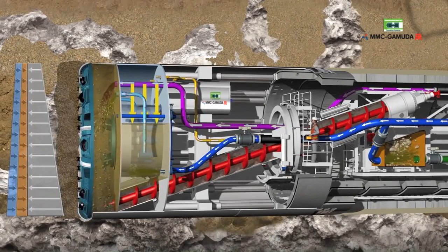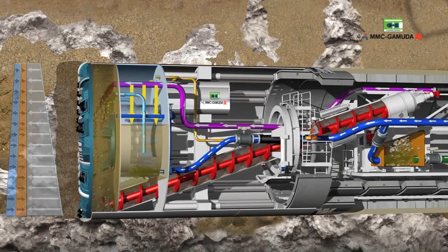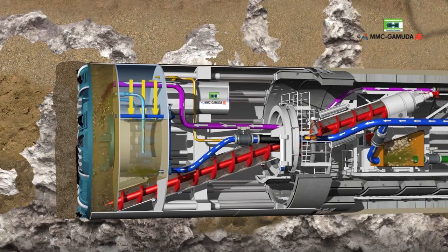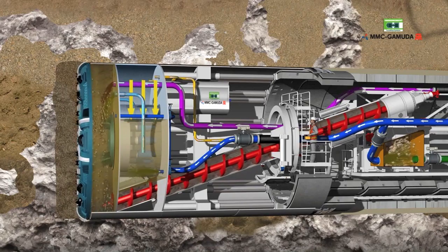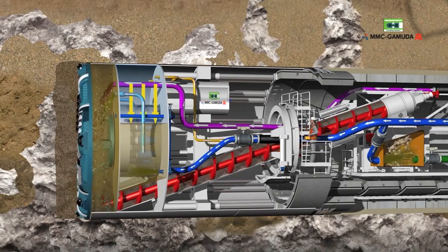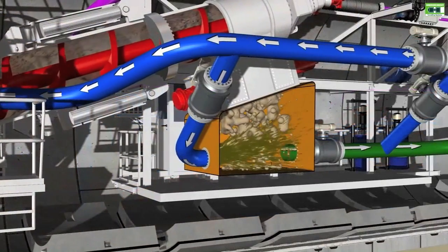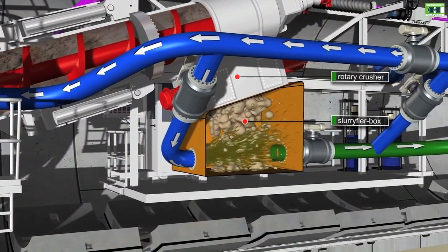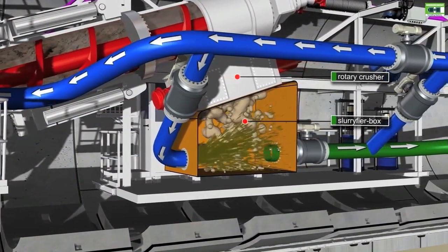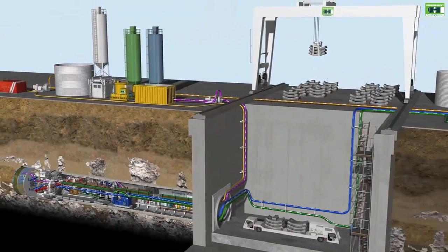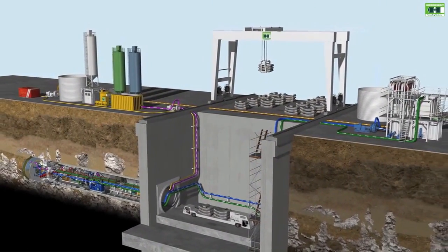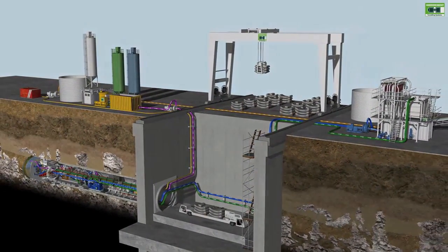Material is discharged from the excavation chamber via a screw conveyor, enabling the combination of highly viscous support material and excavated material. To ensure that this material can then be transported hydraulically via a pipeline, it passes through a rotary crusher unit and is liquefied in the slurry mixing box by adding liquid. Hydraulic transport in the pipeline to the slurry treatment plant complies with the mixed shield system.